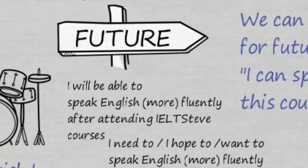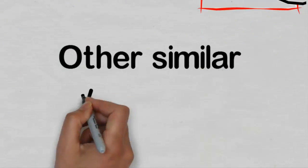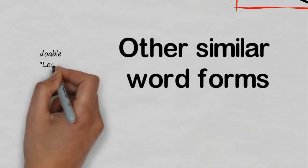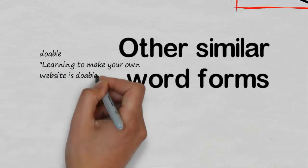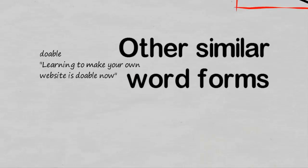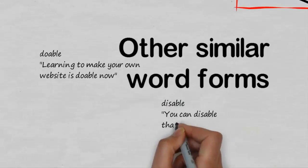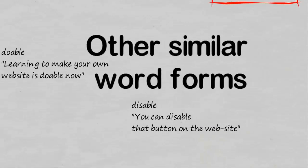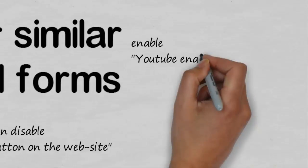There are also some other word forms that use able, and it's very good to know these — especially for writing to make your writing more academic. For example, 'doable' is a good word. It's probably not so academic, but we could use it in speaking or writing, and it's very commonly used at the moment: 'Learning to make your own website is doable now.' Another word connected to able is 'disable' — you might have disabled people, or you can disable a button on your website. Yet another one is 'enable': 'YouTube enables anyone to upload their own videos.'